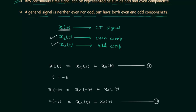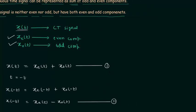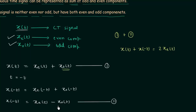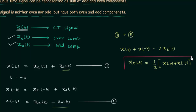To find the even component, we will add equation number 1 and equation number 2. On the left hand side we will have x(t) plus x(-t), and on the right hand side x_o(t) and minus x_o(t) cancel out, leaving twice x_e(t). Therefore the even component x_e(t) is equal to one half times the quantity x(t) plus x(-t). This is the expression for the even component.